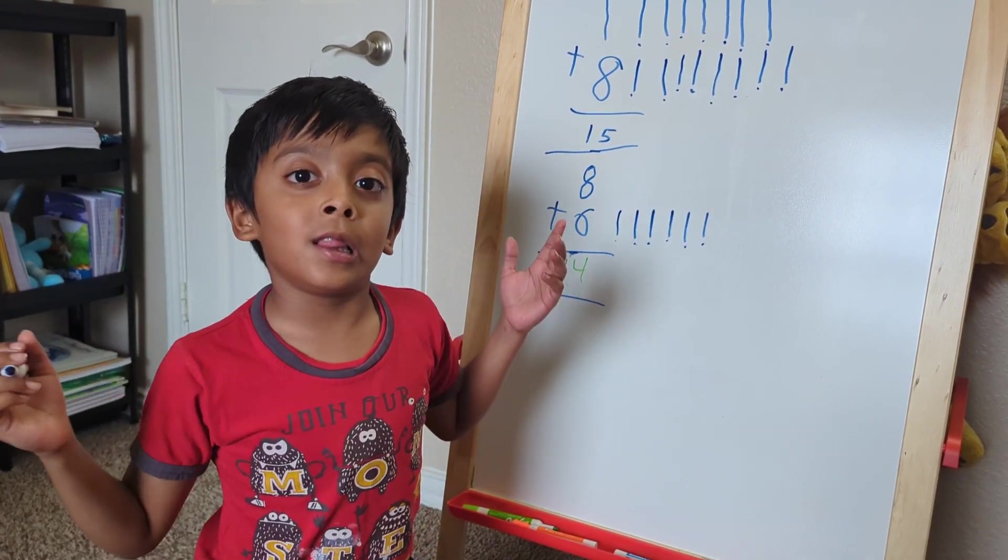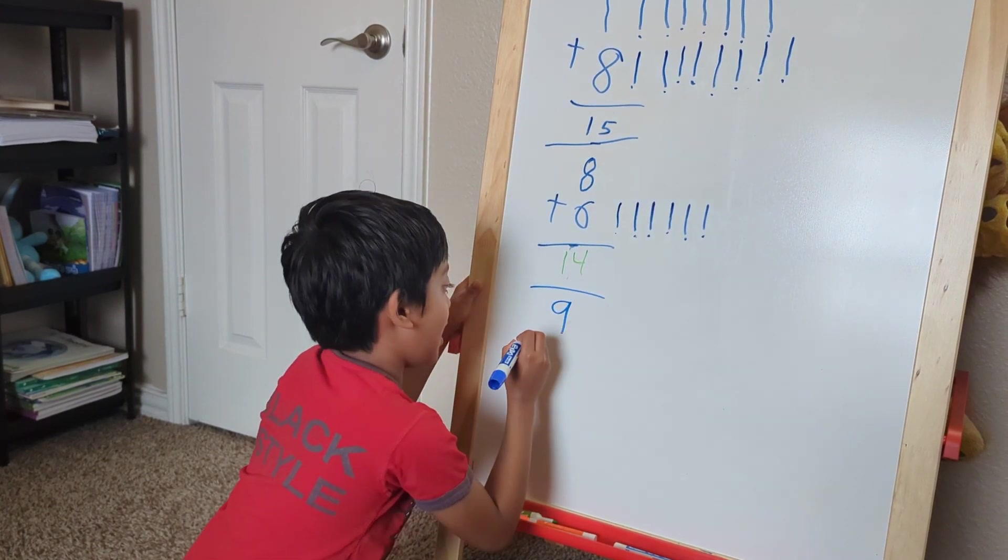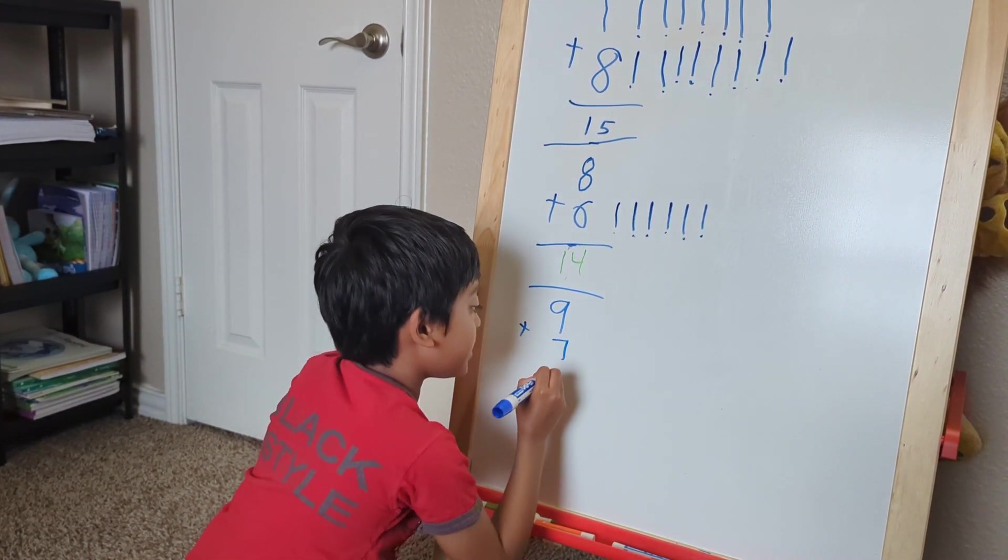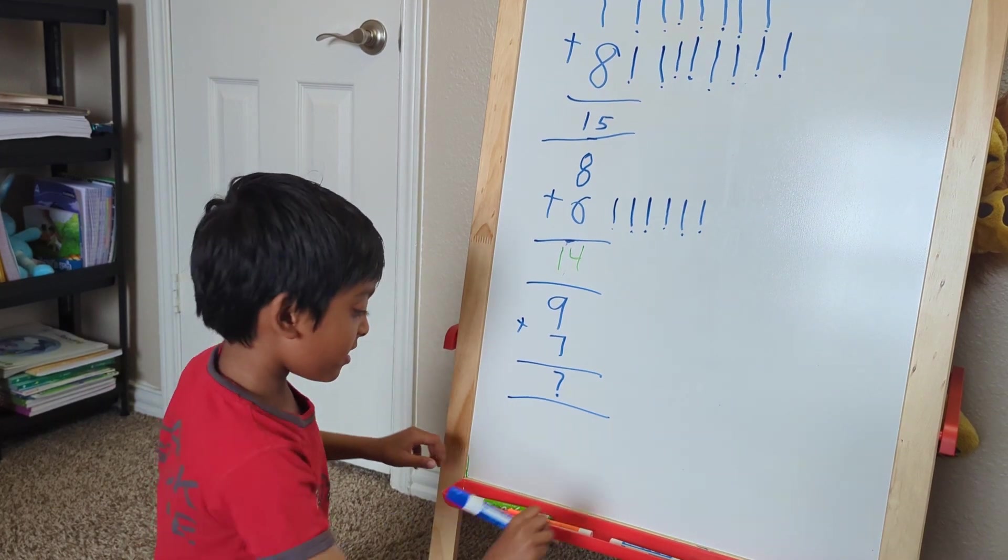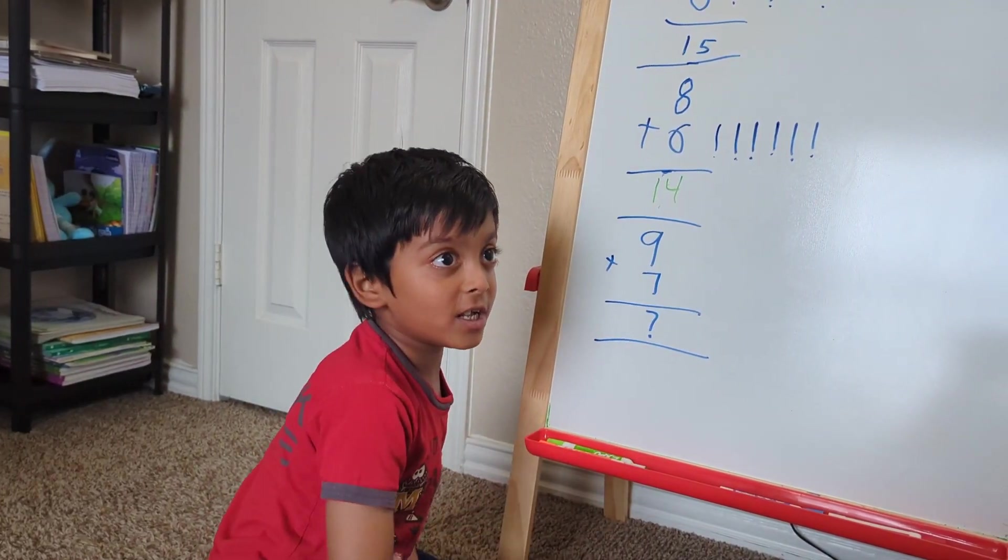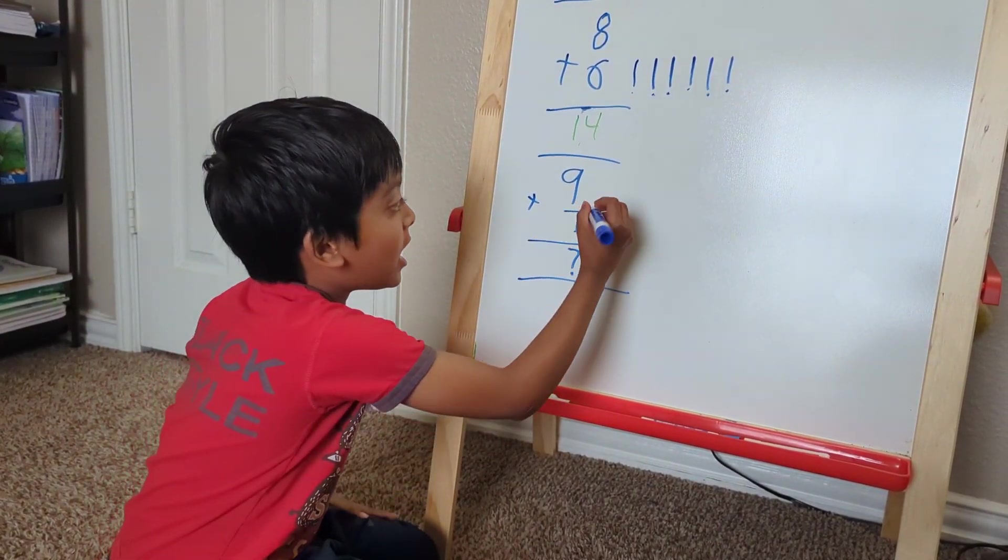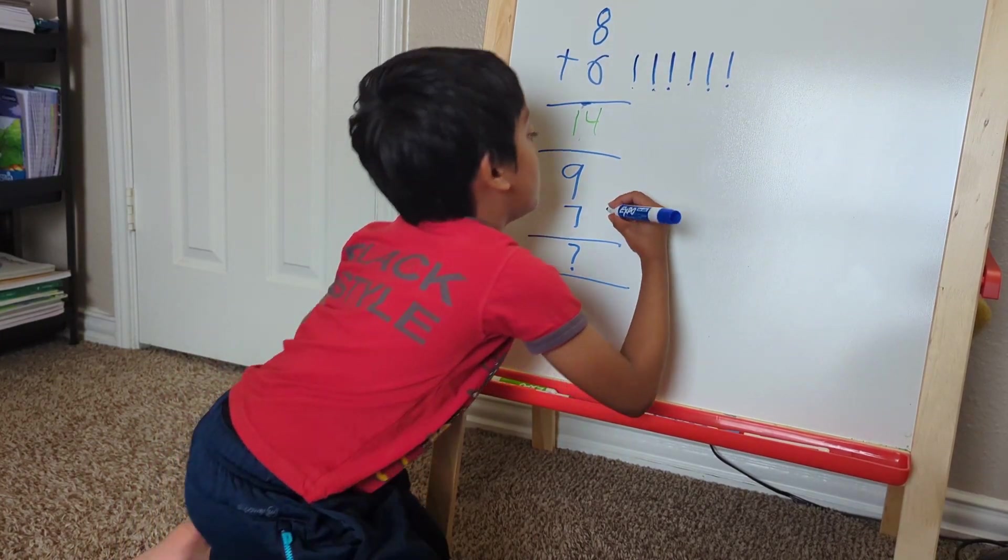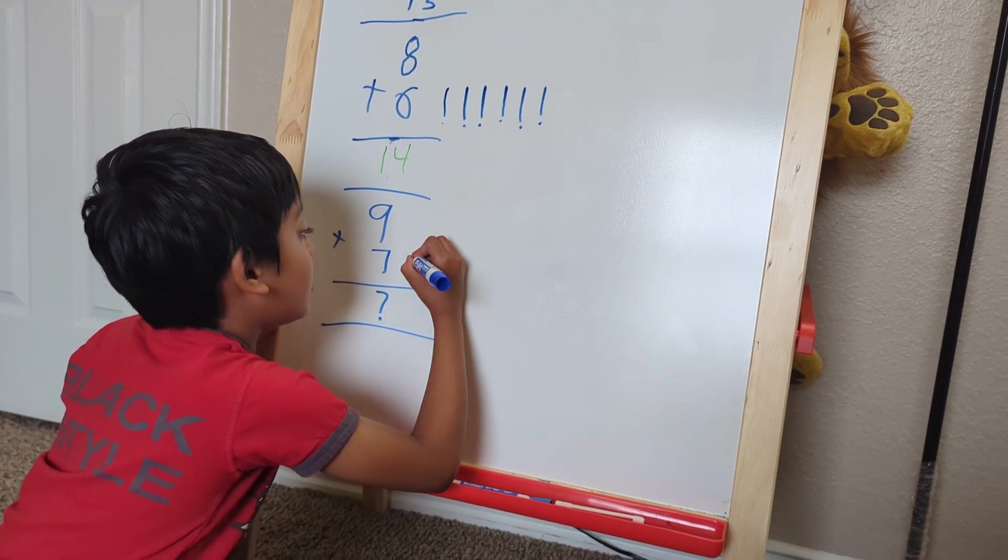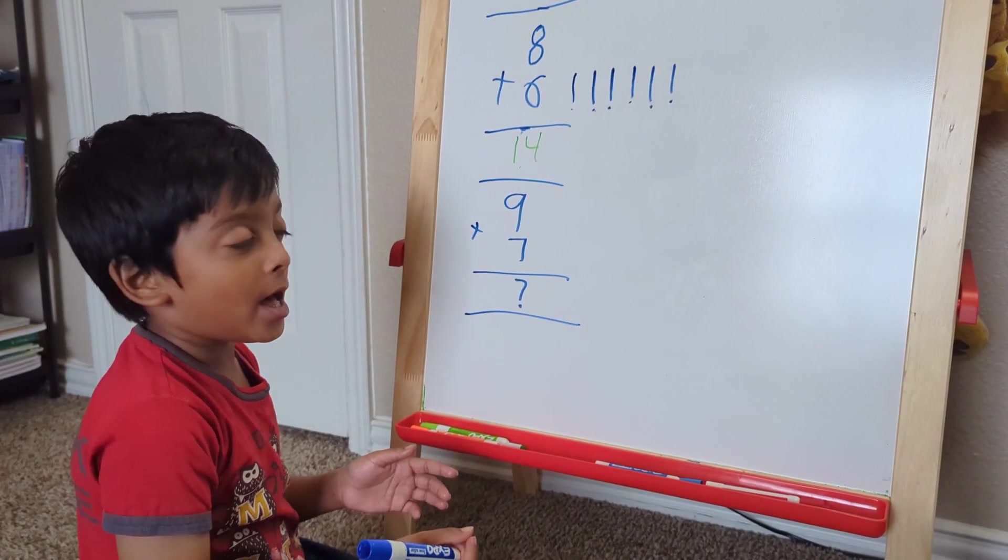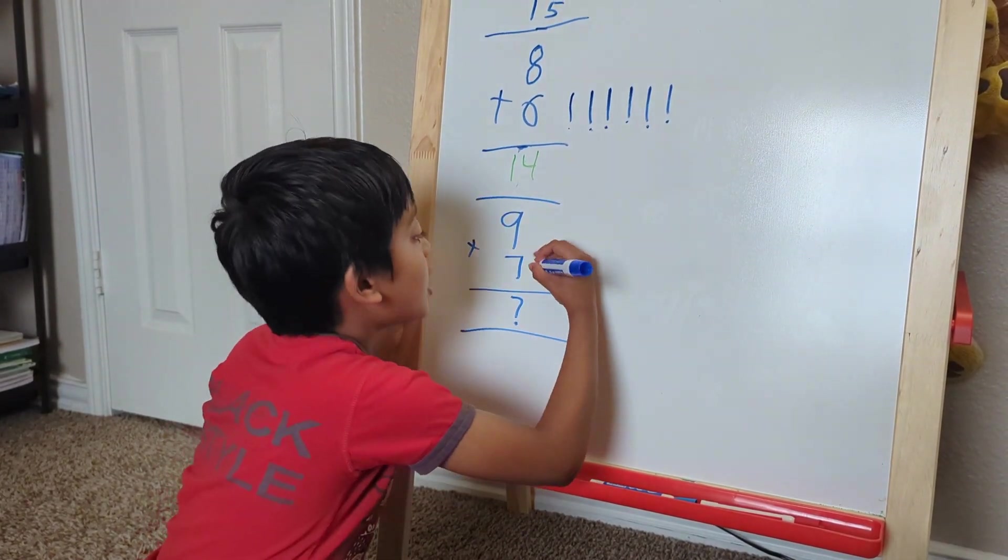Okay, now let's do the last addition. So let's do 9 plus 7. Let's do the same thing in this pattern. So only write the lines for the second number, not the first number. So we know that this one is 9. So we just put 9 aside. Now, this is 7, so let's write 7 lines.